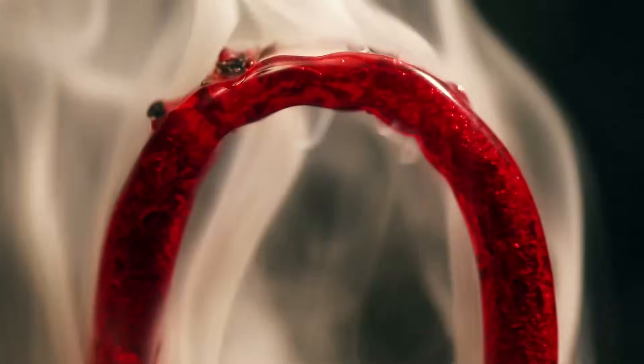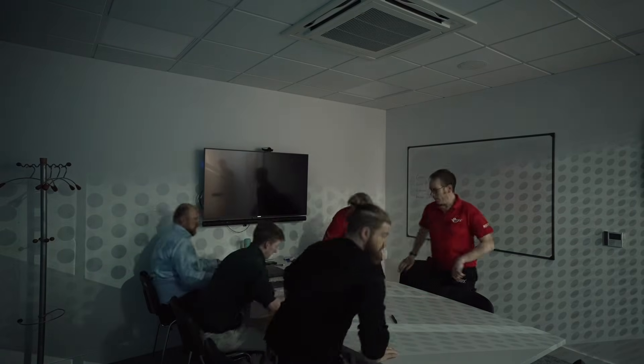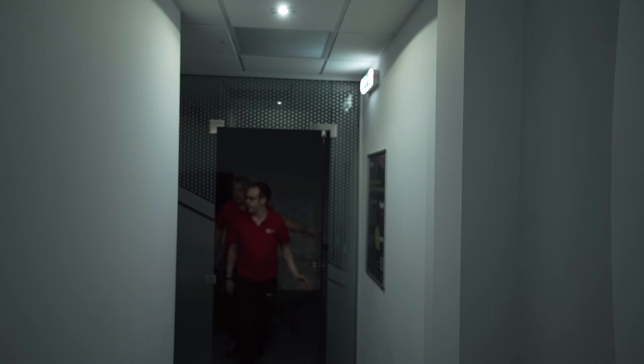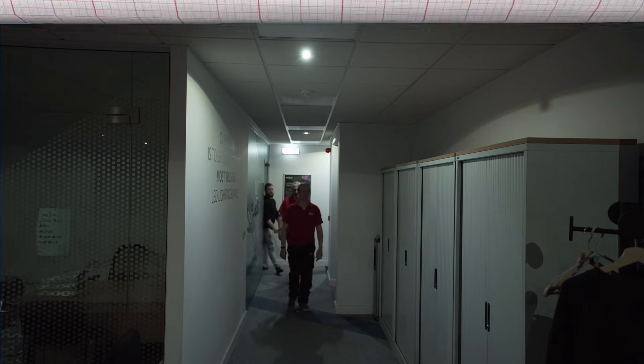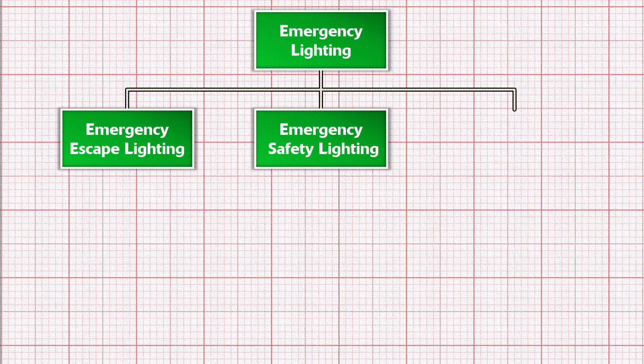Now we're going to consider some other terms connected to emergency lighting, which relate more to the way the lighting is used. Imagine it's night and a fire has broken out in a building. The insulation on the cables has melted, causing protective devices to operate and the lighting circuits have lost power. In a well-designed and well-maintained building, the emergency lighting will have kicked in. Depending on where you are, it will be fulfilling one of several options, which break down into three broad areas: emergency escape lighting, emergency safety lighting, and standby lighting.